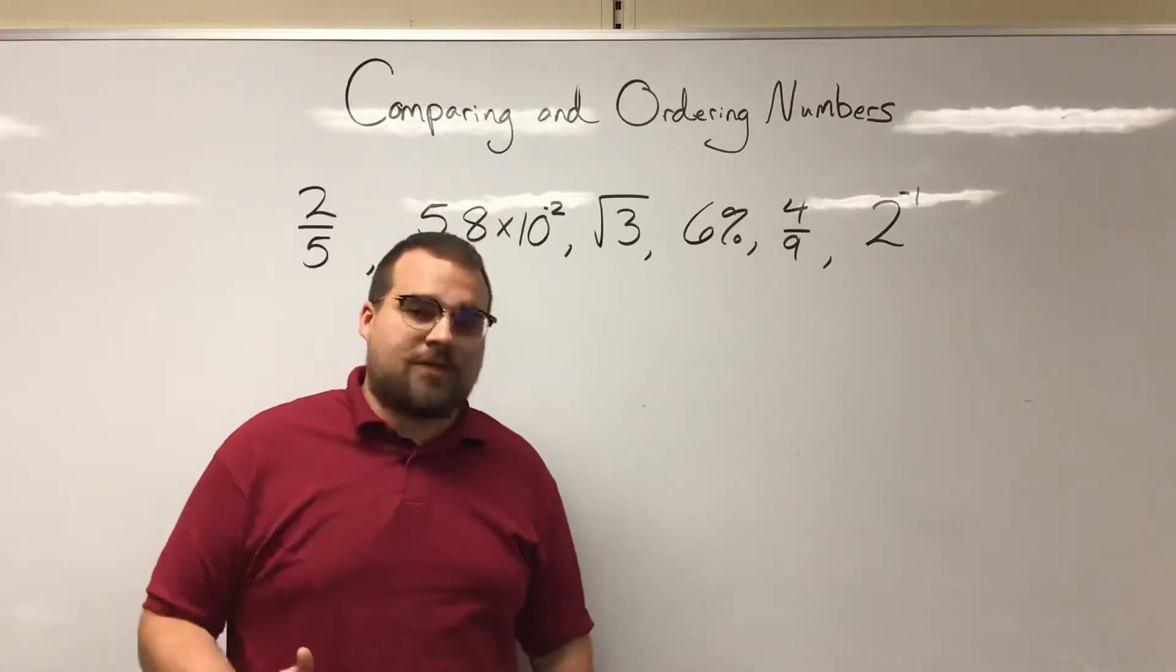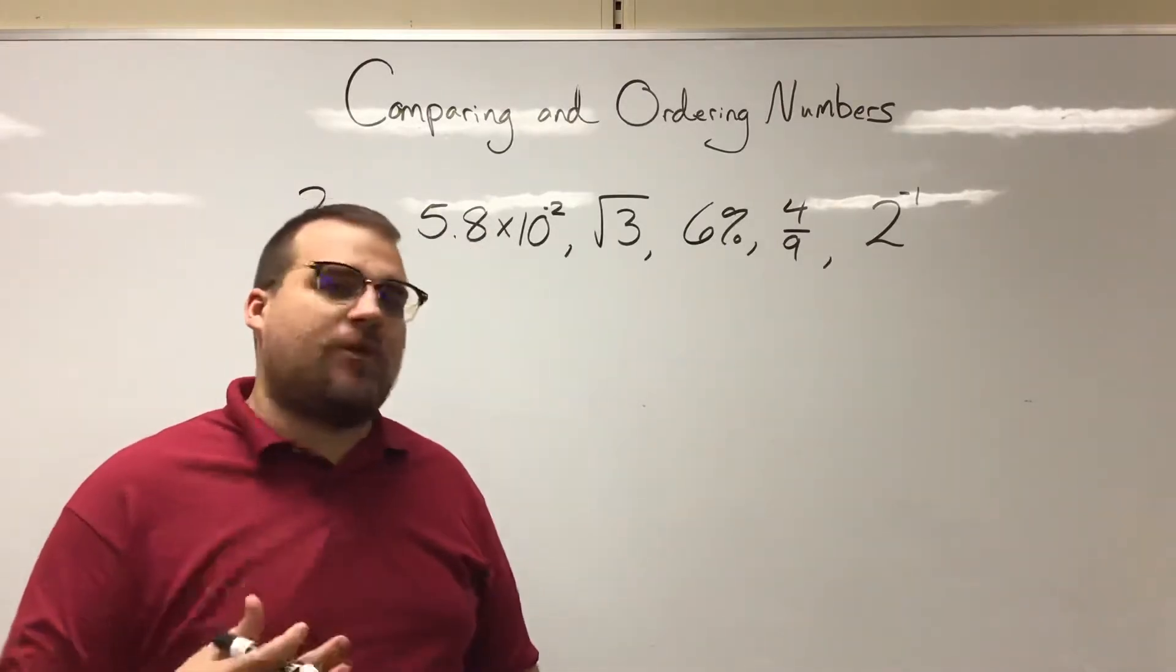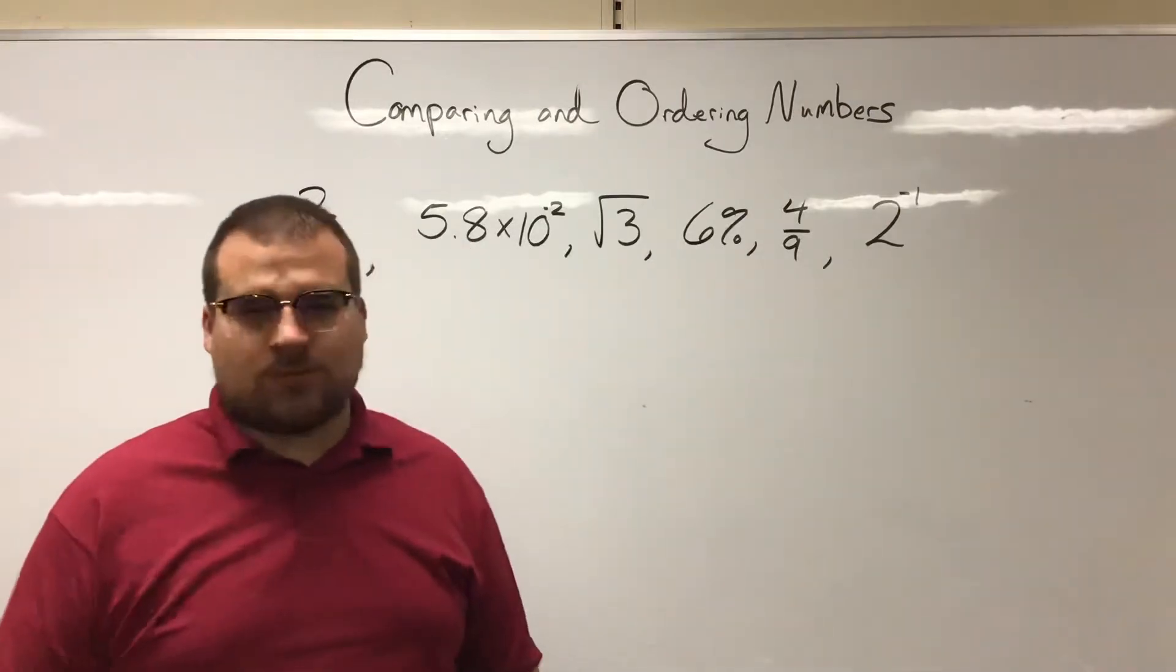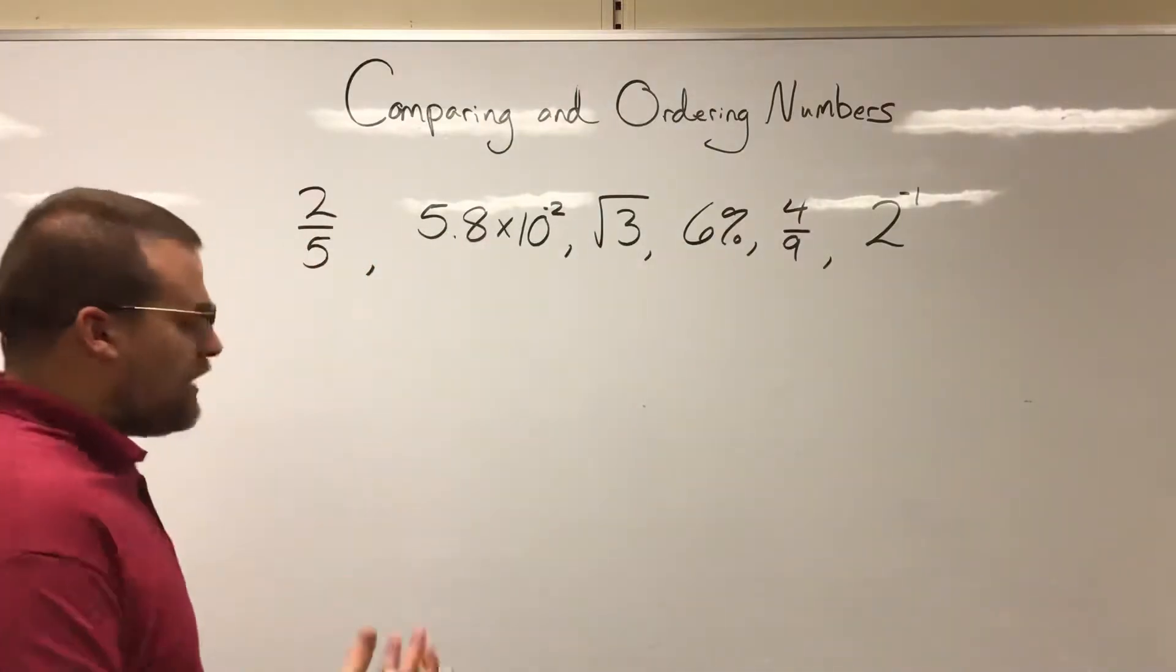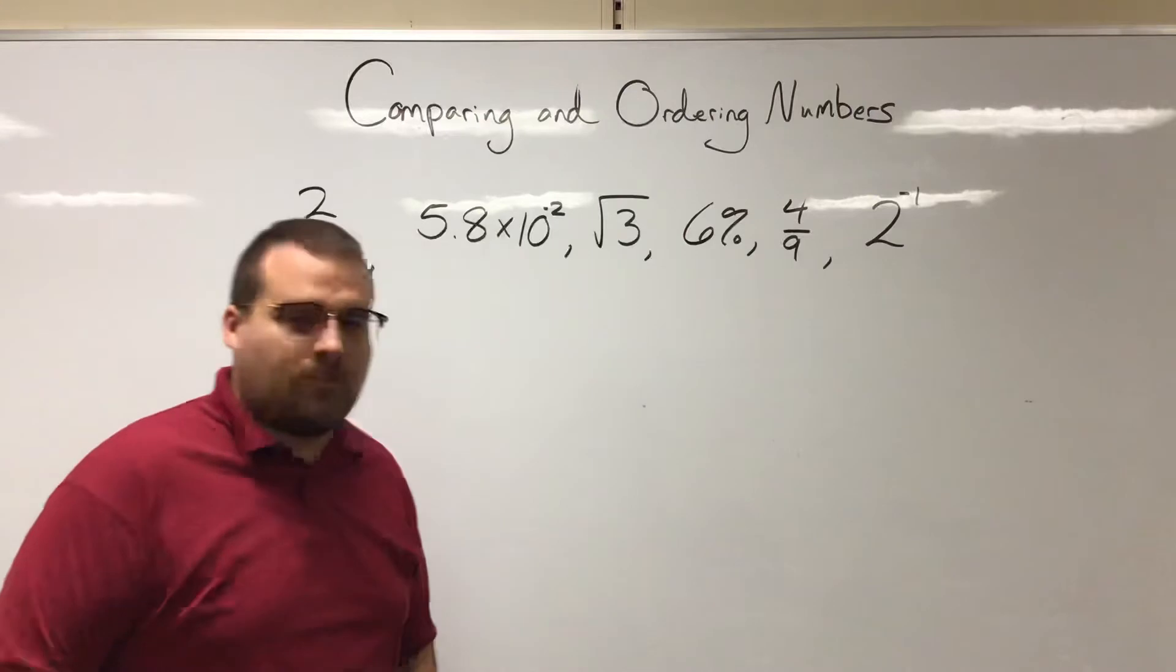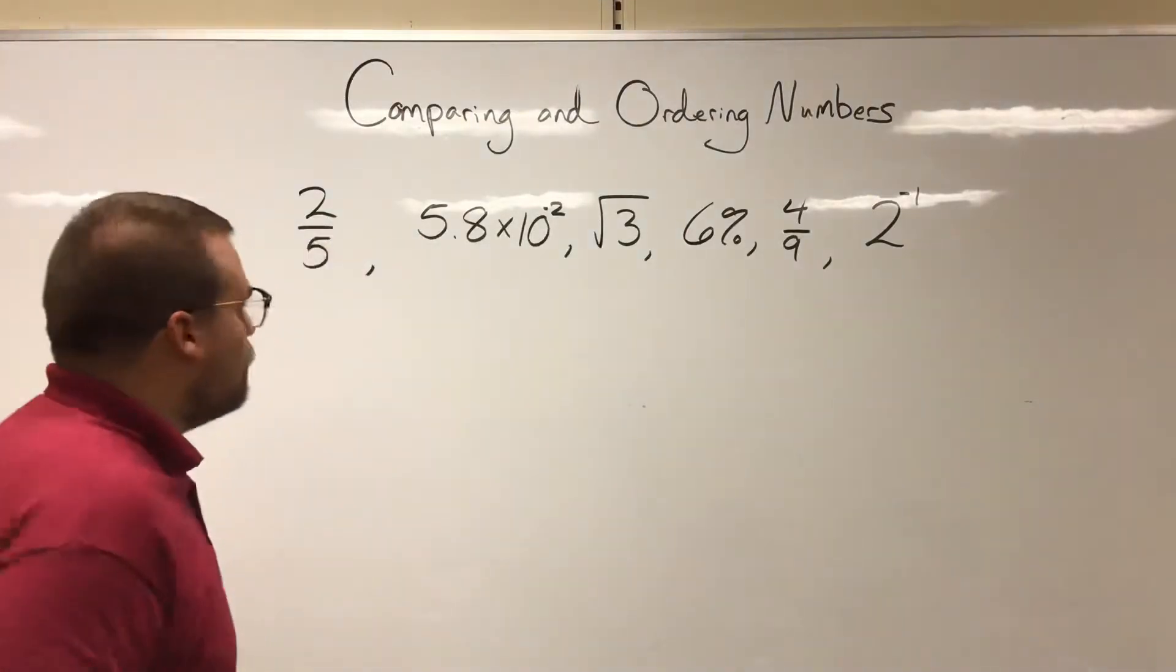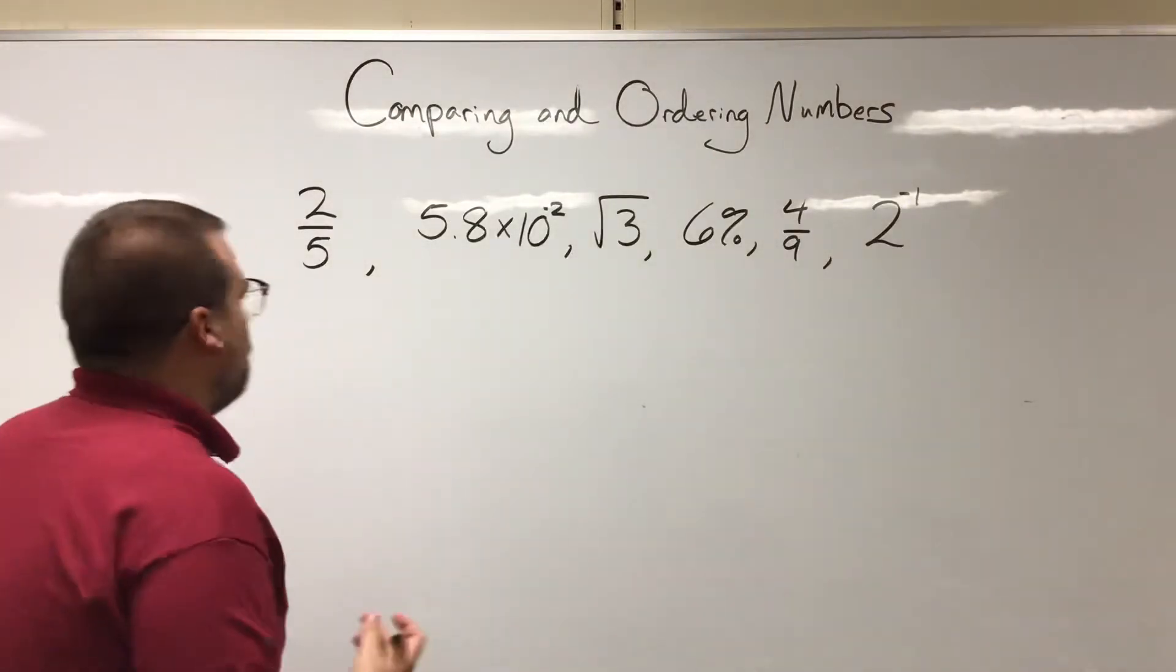And what I would recommend is almost every number we have we know how to turn into a decimal, and it's pretty easy to order decimals. So whenever looking at all sorts of different types of numbers, let's find a way to turn them into a decimal. The easiest way is going to be using a calculator, right?